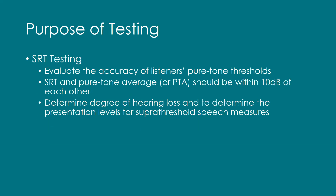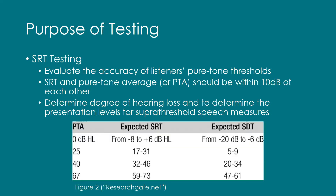The purpose of SRT testing is to evaluate the accuracy of a listener's pure tone thresholds, which can be obtained through pure tone audiometry. SRT and pure tone average, or PTA, should be within 10 dB of each other. You can see the breakdown of the correlation in Figure 2. The SRT is also used to determine the degree of hearing loss and to determine the presentation levels for supra-threshold speech measures.